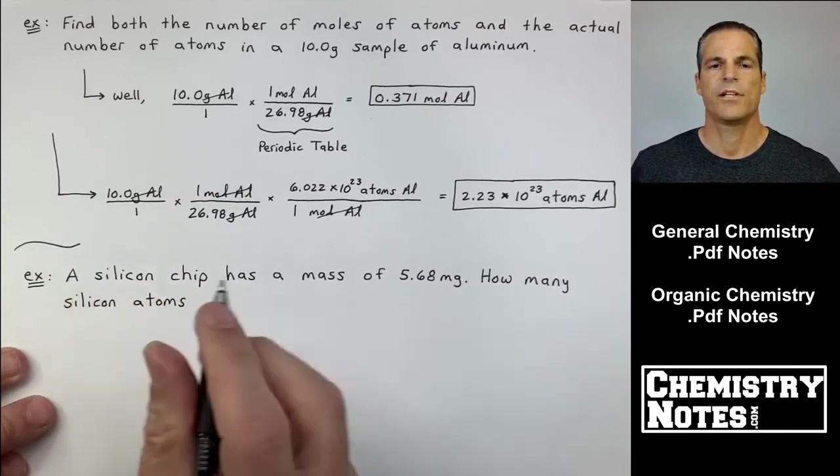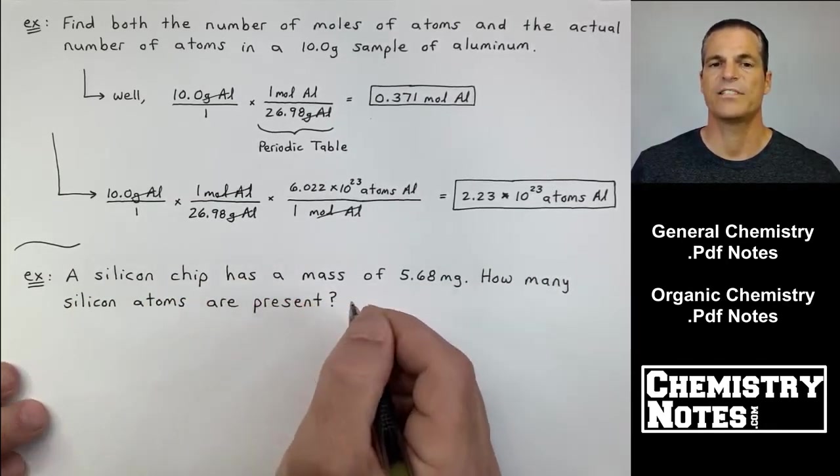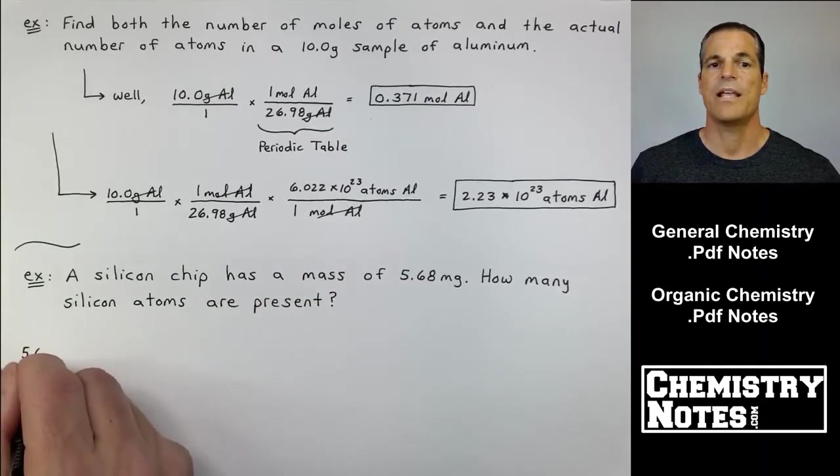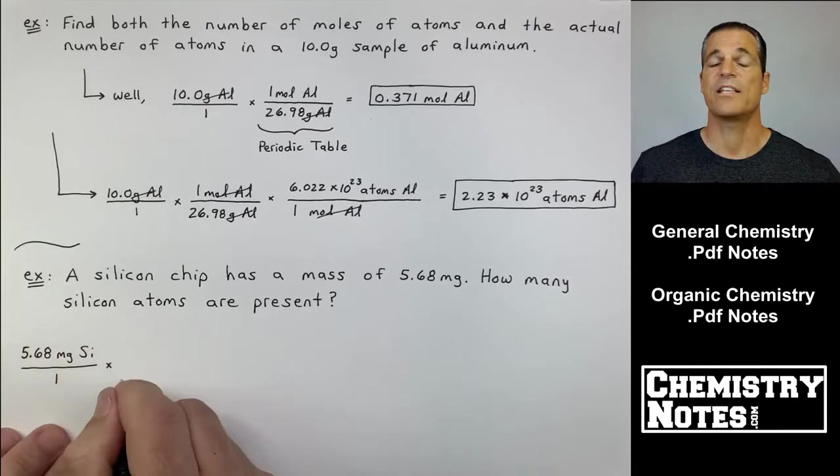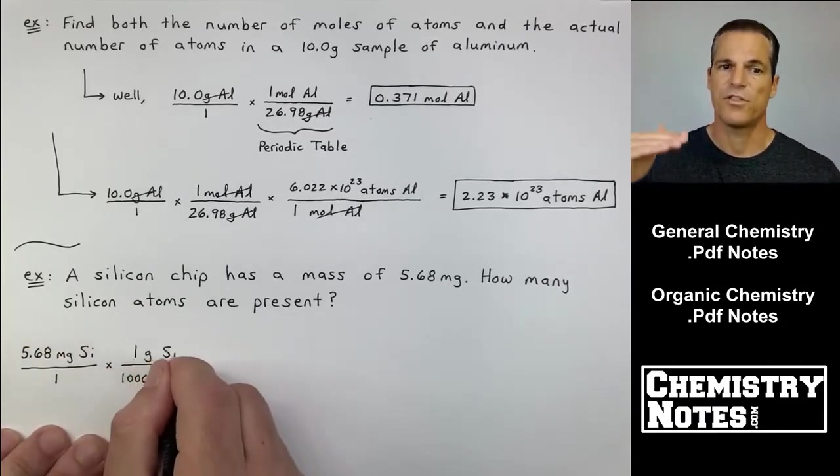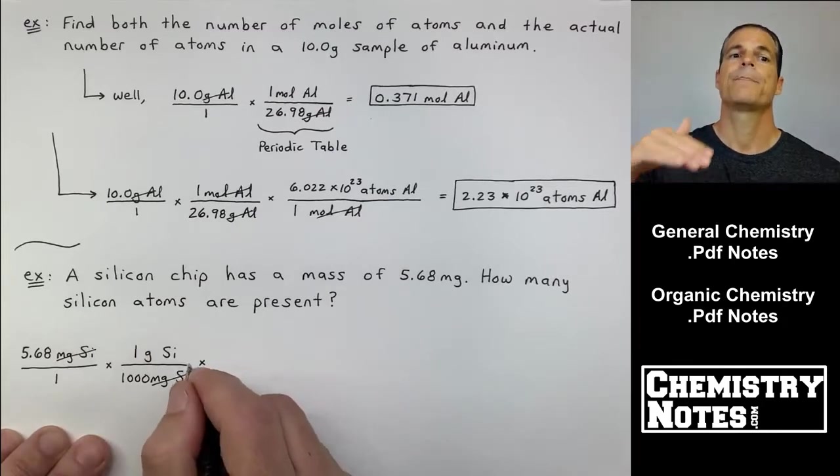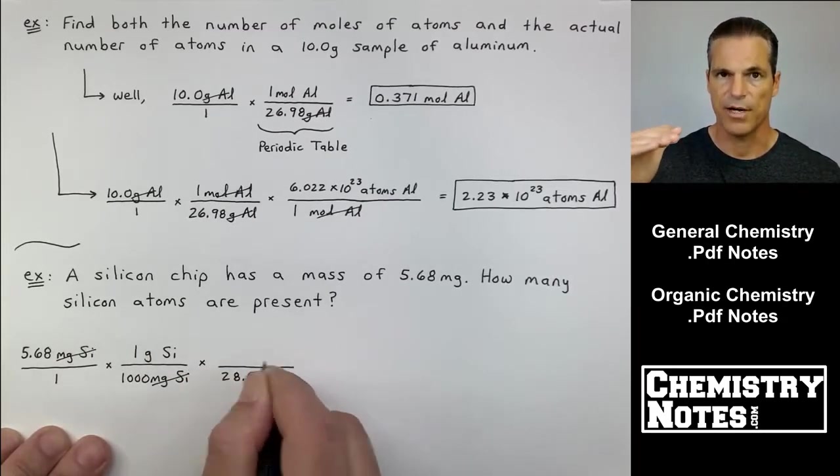Example, third example: a silicon chip has a mass of 5.68 milligrams. How many atoms are present? Start with what you're given, put it over one. In this case, we're given milligrams. I've got to get out of milligrams. So I do a thousand milligrams on the bottom, one gram of silicon on top. That gets me out of milligrams and into grams.